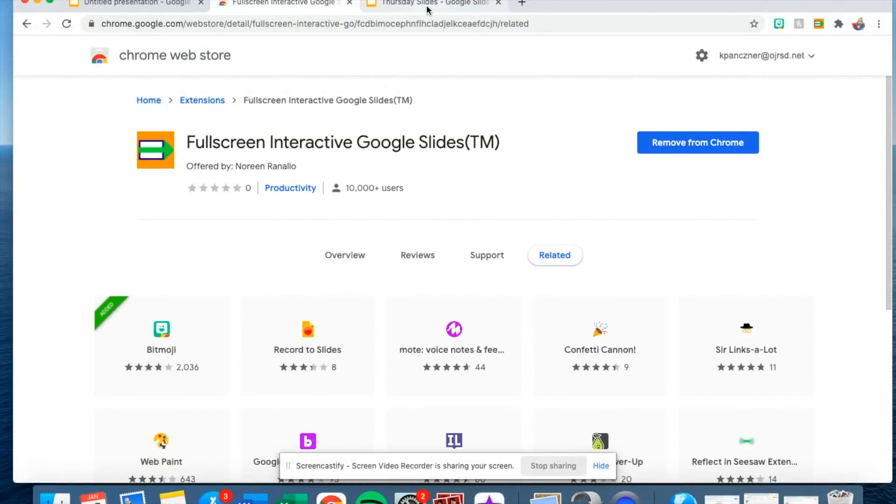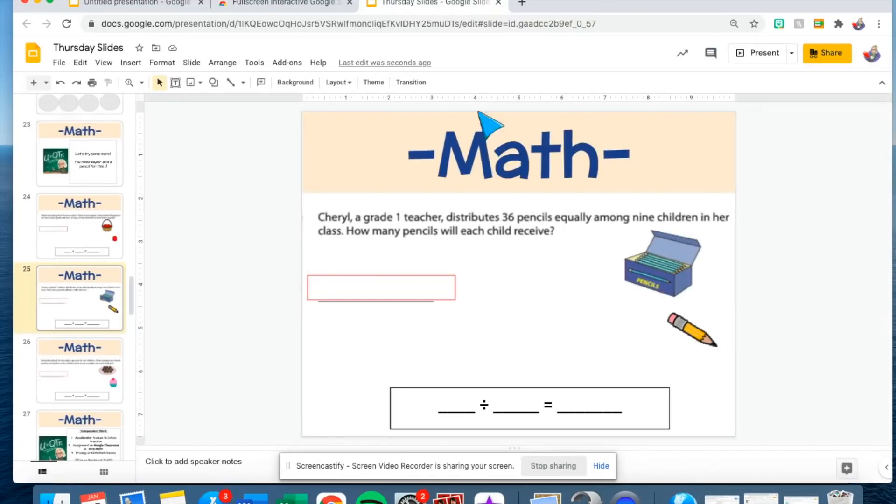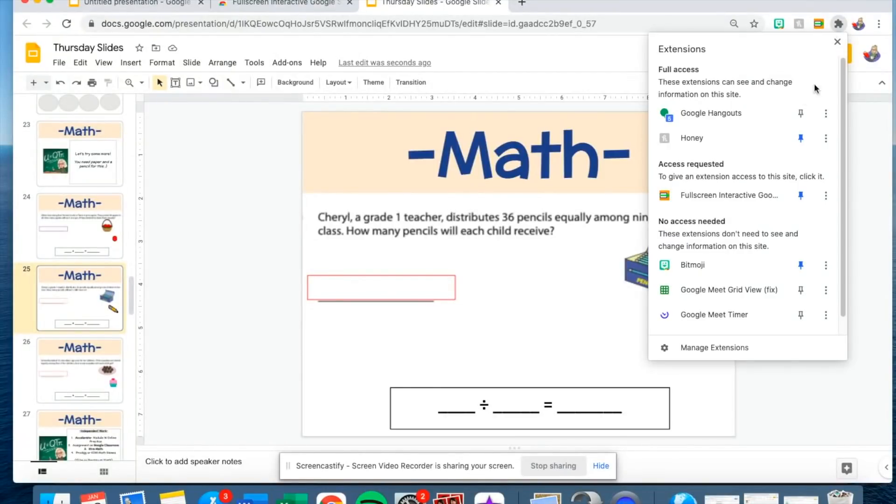Once you've done that you're going to go to the slide that you want to present and instead of clicking present where you normally would you are actually going to click on your little full screen interactive Google Slides icon. If yours is not already up here you click on this little extensions puzzle piece and you can choose which ones to pin to keep at the top up here.